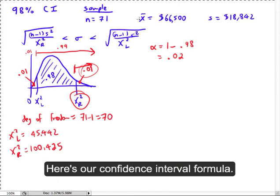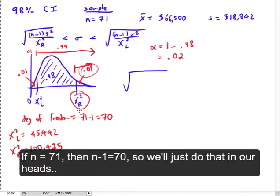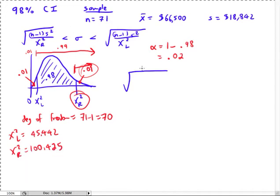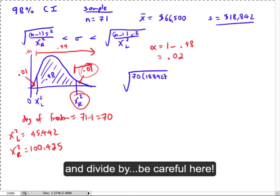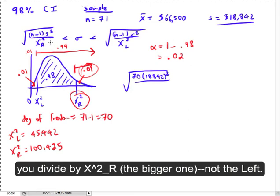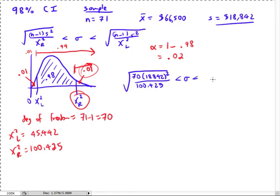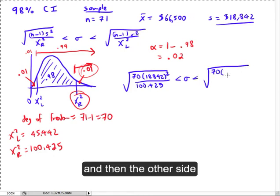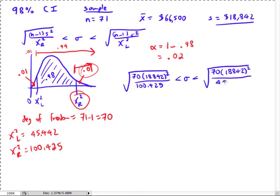Okay. Now that we've got that done, we're ready to go. Here's our confidence interval formula. So let's do it. It's going to be square root n minus 1. I'm just going to do that in my head. If n is 71, then n minus 1 is 70. So it's 70 times s-squared. S is 18,842. And then you divide by, be careful here, you're dividing by chi-squared right, the bigger one first. So 100.425 goes down there. And then on the other side, we're going to do n minus 1, so it's 70 once again. Same top of your fraction, nothing changes. But then the bottom, you're going to use the chi-squared left value, 45.442.